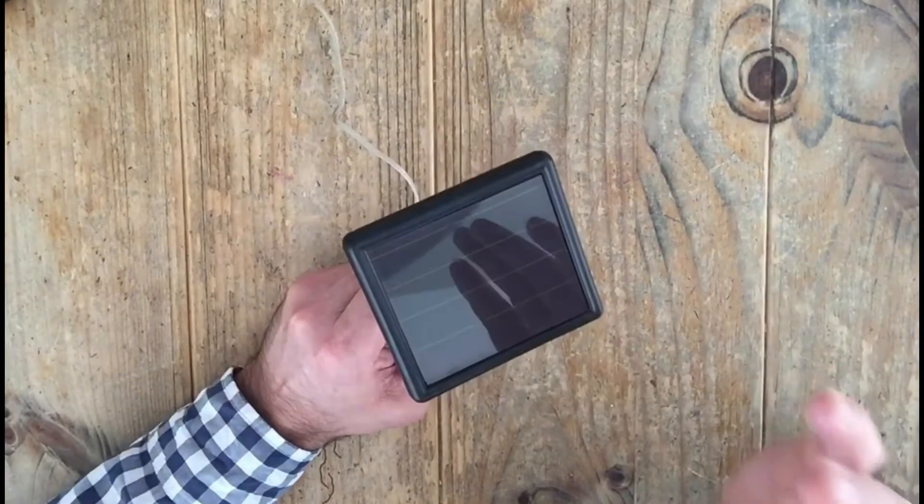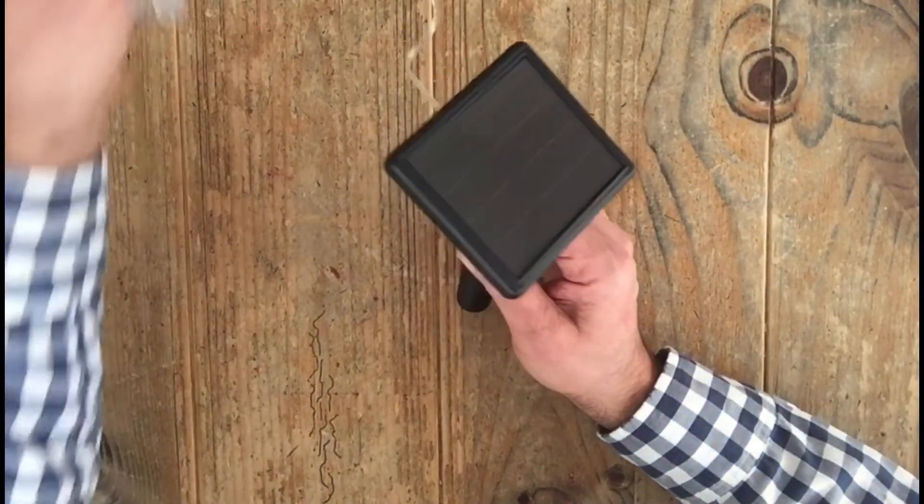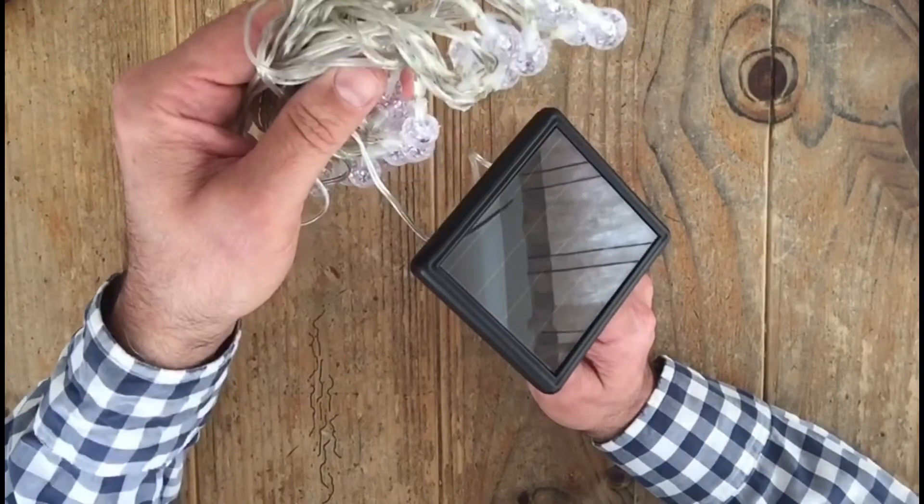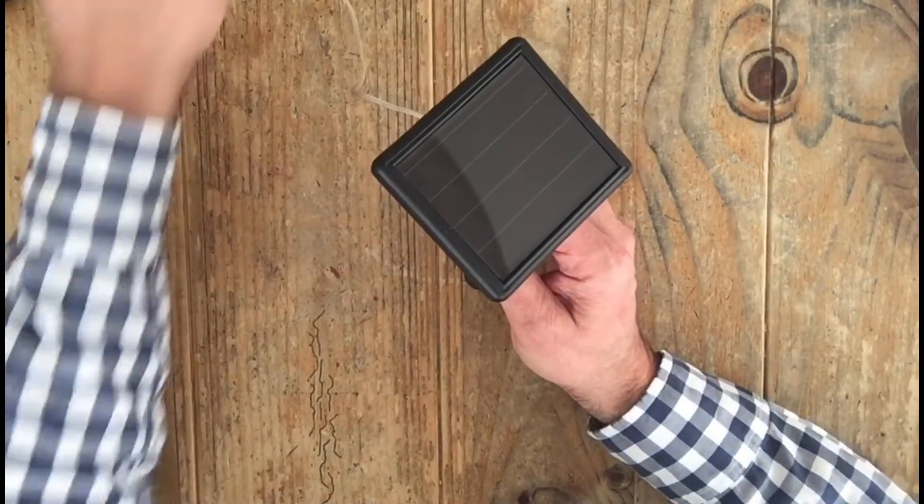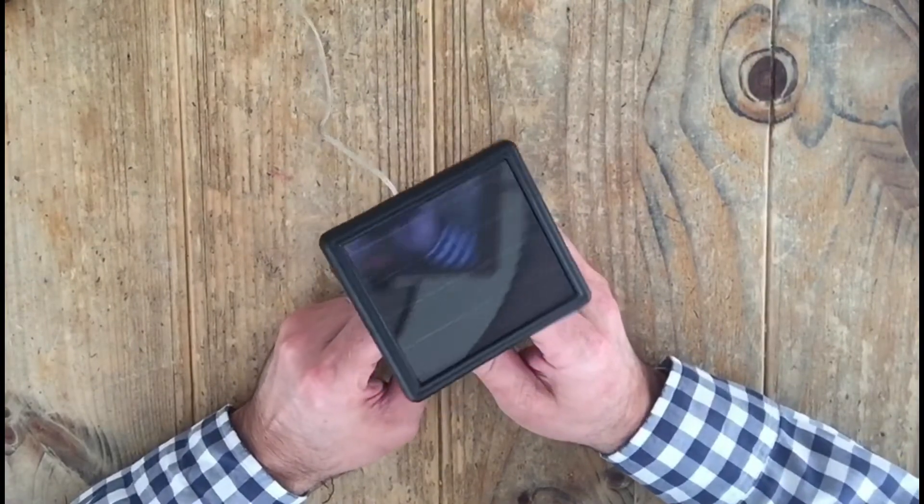All of our solar-powered garden lights operate in essentially the same way. This is the solar panel to our solar-powered string lights, but these instructions and tips will apply to all the solar-powered garden lights in our line.